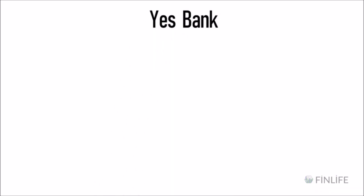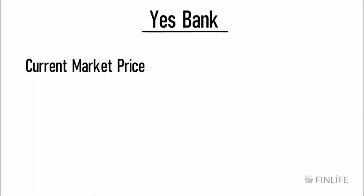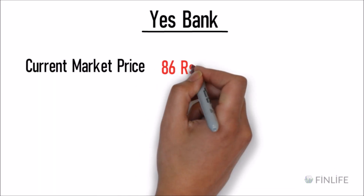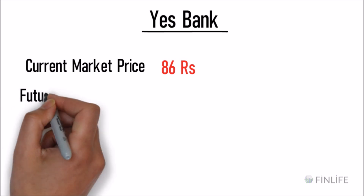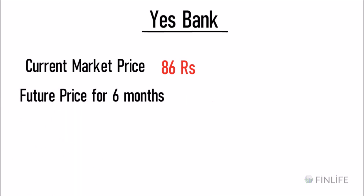If the current market price of Yes Bank is 86 rupees and the future price for six months is 89 rupees — this is just a hypothetical example — the future price of a six-month contract can be changed to one year, six months, one month, and so on. Future prices and cash market prices are both volatile, mainly driven by demand and supply.